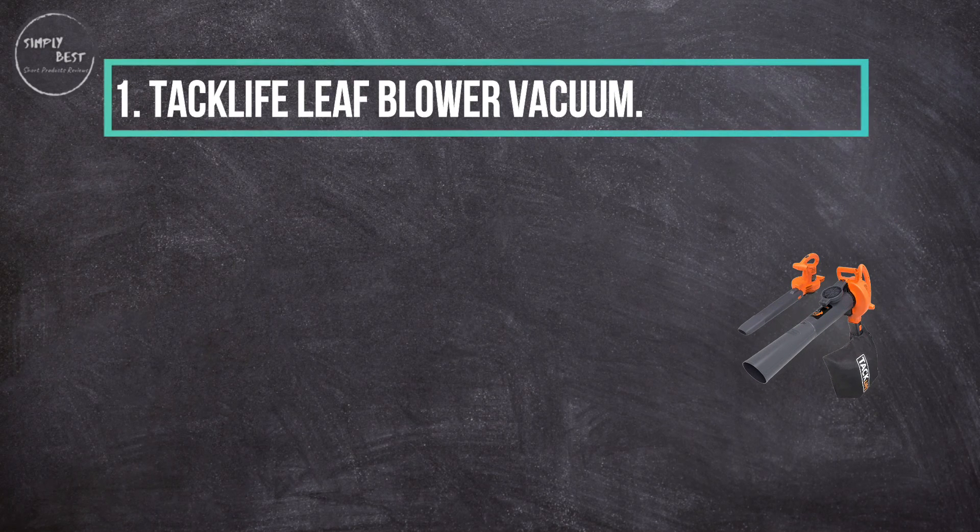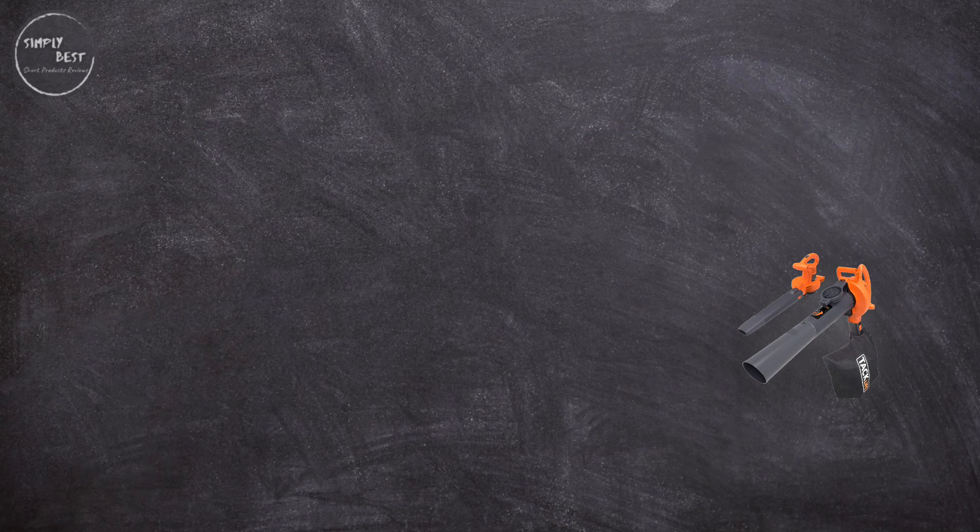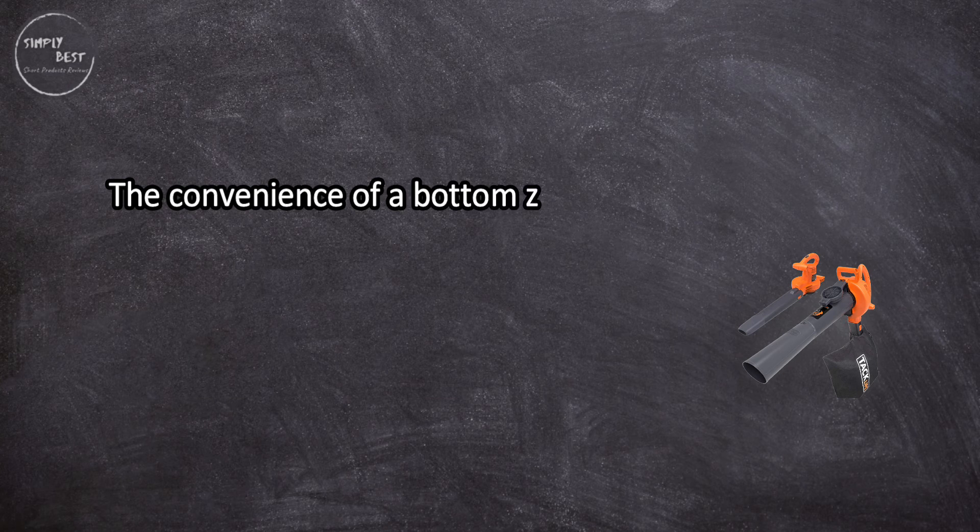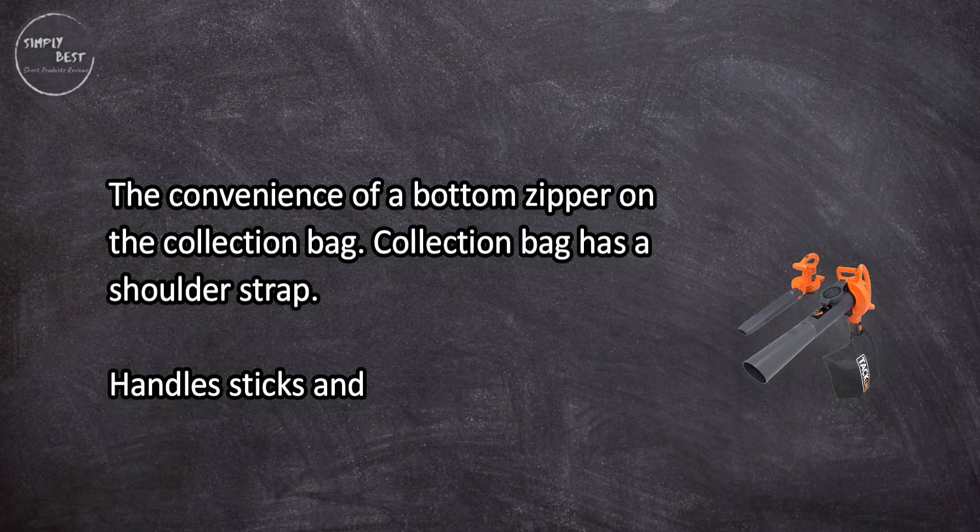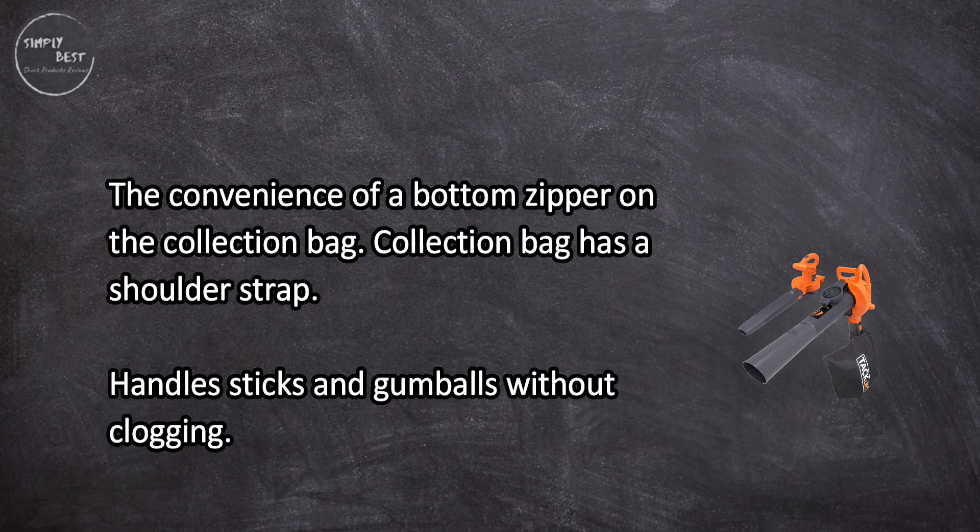At number one, Tacklife leaf blower vacuum. The convenience of a bottom zipper on the collection bag. Collection bag has a shoulder strap, handles sticks and gumballs without clogging.